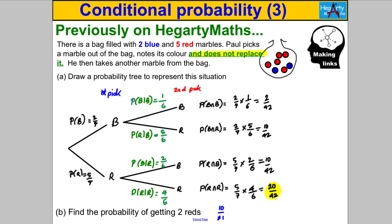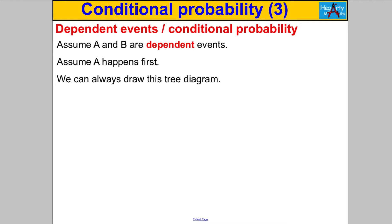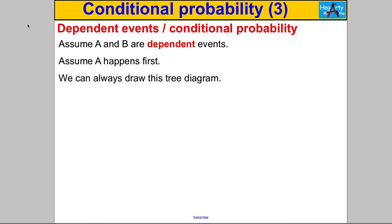In general, it doesn't have to be about marbles and taking them out of bags — we can be more general with general events A and B. I want to show you a general tree diagram we can always draw with conditional probability. Let's assume we've got two events A and B and they are dependent. Let's assume A happens first. Either A happens or A doesn't happen — a mathematician writes that as A-dashed, which is the same as 'not A'.